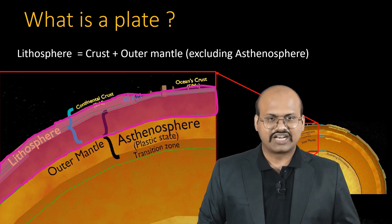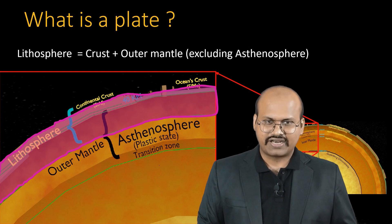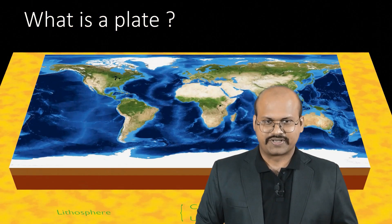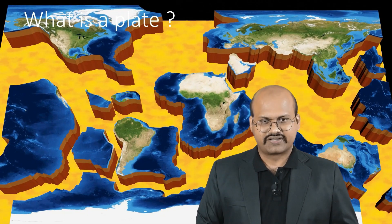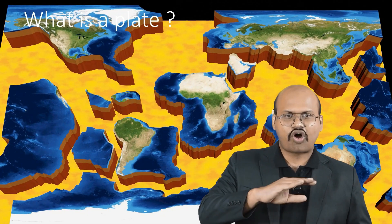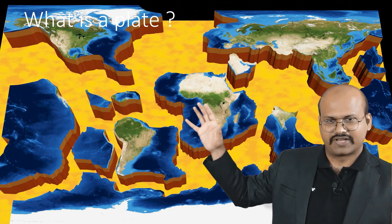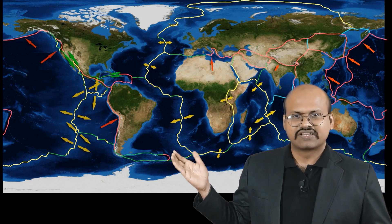The lithosphere consists of the solid outer mantle and the crust — everything above the asthenosphere. The lithosphere is divided into different parts and each part is called a plate. Some are bigger parts called major plates while some are very small, called minor plates. Boundaries exist all around the earth, and along these boundaries there are movements. All these plates move with respect to each other in different directions.